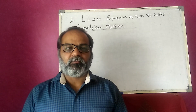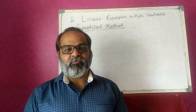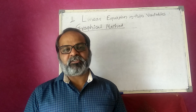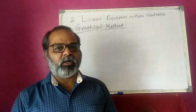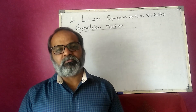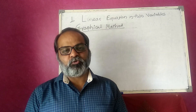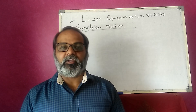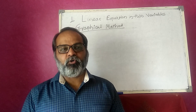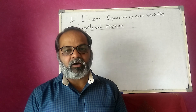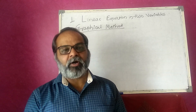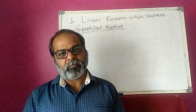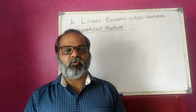We know the graphical representation of a linear equation is a straight line. That means we are drawing two straight lines, and the point of intersection is the solution of the given equations. So we are plotting a graph, placing points, and the point of intersection is our solution.